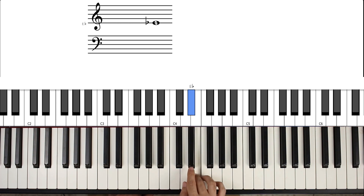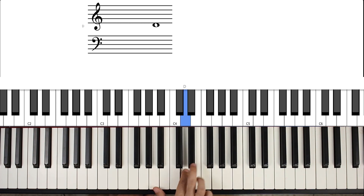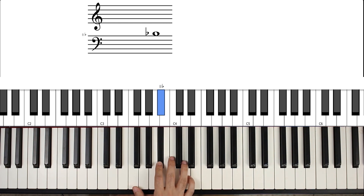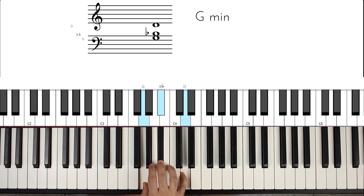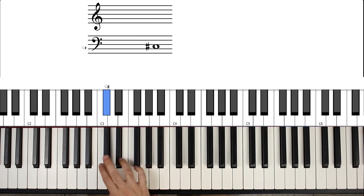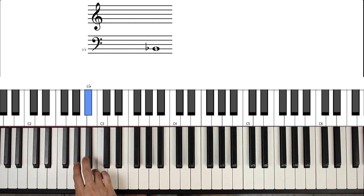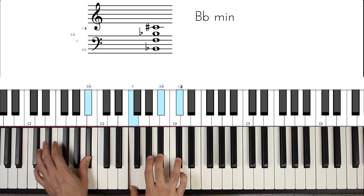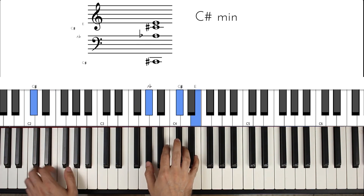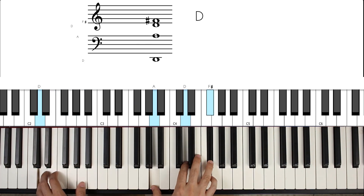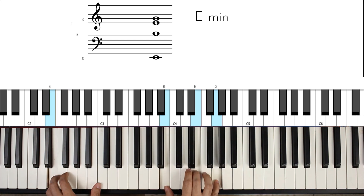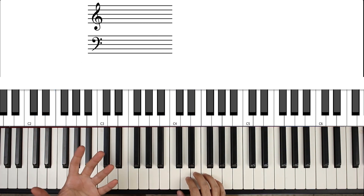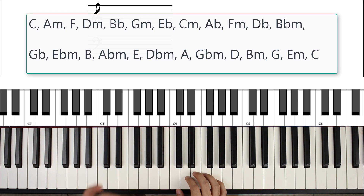And then three semitones down and play a D minor. And then four semitones down and play a B flat major. And three semitones to a minor. And four to a major. And three to a minor. And four to a major. And three to a minor, and so on.